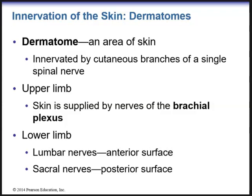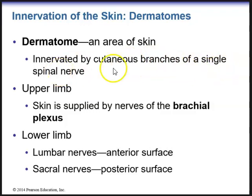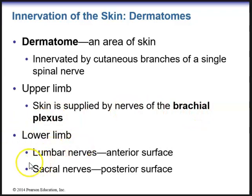Now let's go into dermatomes. A dermatome is an area of the skin that is innervated by a cutaneous branch of a single spinal nerve. Cutaneous means toward the skin. In the upper limb, the skin is supplied by nerves of the brachial plexus. In the lower limb, we have lumbar nerves on the anterior surface and sacral nerves on the posterior surface.